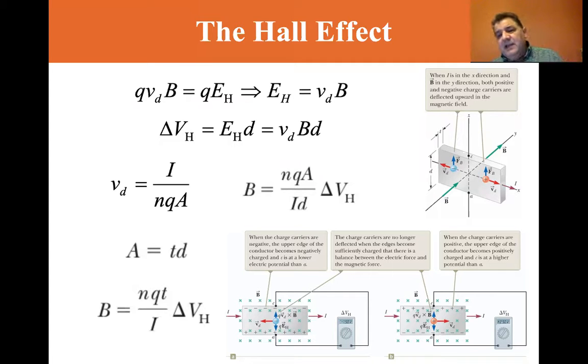You have a current coming out of the page at an angle through this block of conducting material. So you have the magnetic field going this way, you have the current in this way.